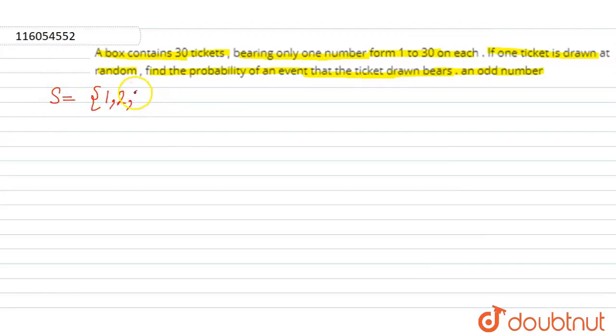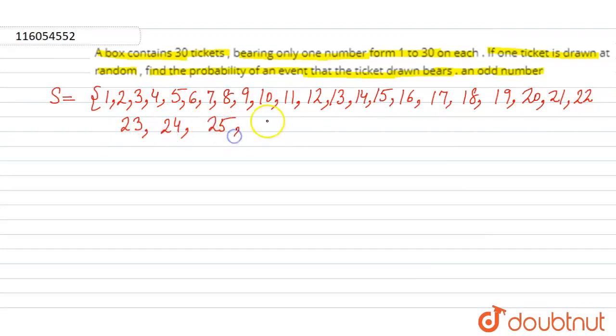Sample space S is equal to 1, 2, 3, 4, 5, 6, 7, 8, 9, 10, 11, 12, 13, 14, 15, 16, 17, 18, 19, 20, 21, 22, 23, 24, 25, 26, 27, 28, 29 and 30. This is our sample space. If we count the number of sample points, then n(S) is equal to 30. Because we have 1 to 30, so the number of sample points is 30.